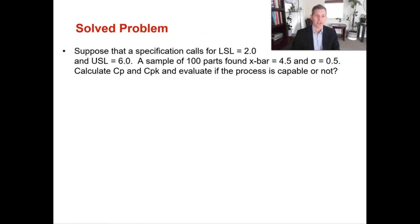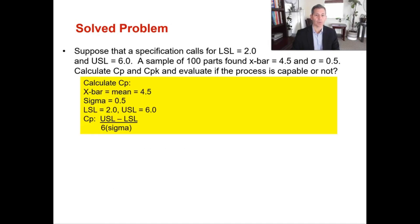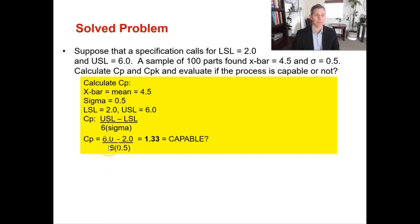Here's a CPK example: the LSL is 2, the USL is 6, and a sample of 100 parts found an X-bar of 4.5 and a sigma of 0.5. First, calculate CP: (6 minus 2) divided by (6 × 0.5) equals 4 divided by 3, which gives a CP of 1.33. If you only had that information, you'd say this process is capable because it came to 1.33.